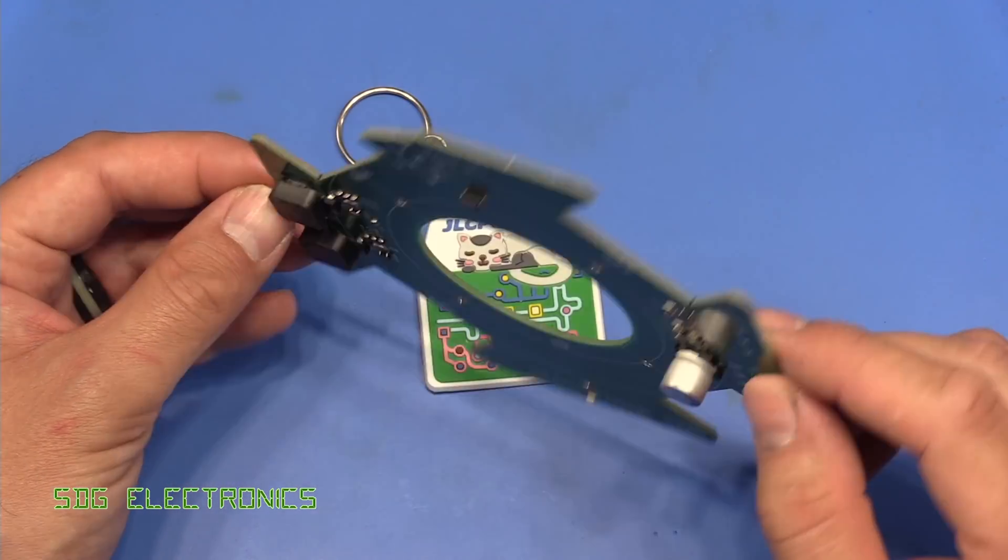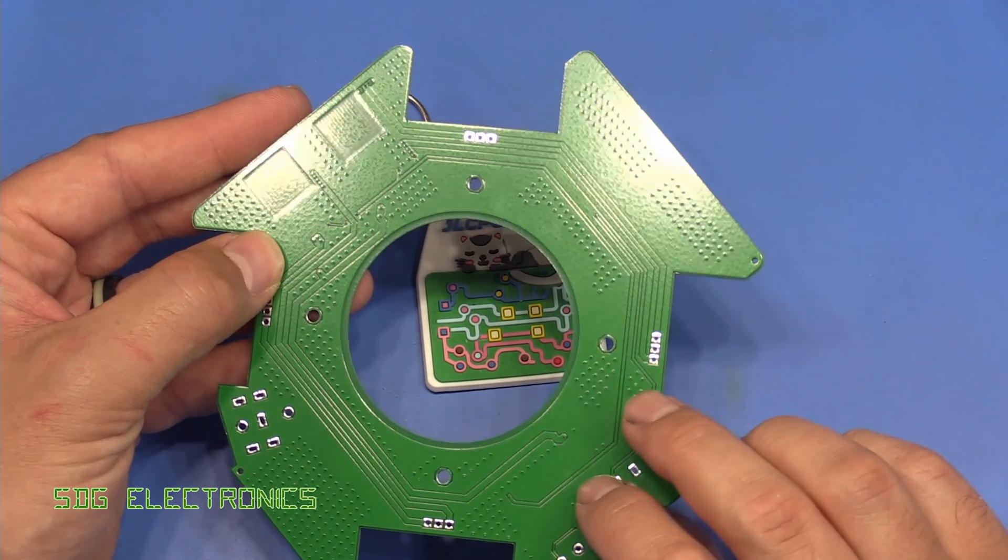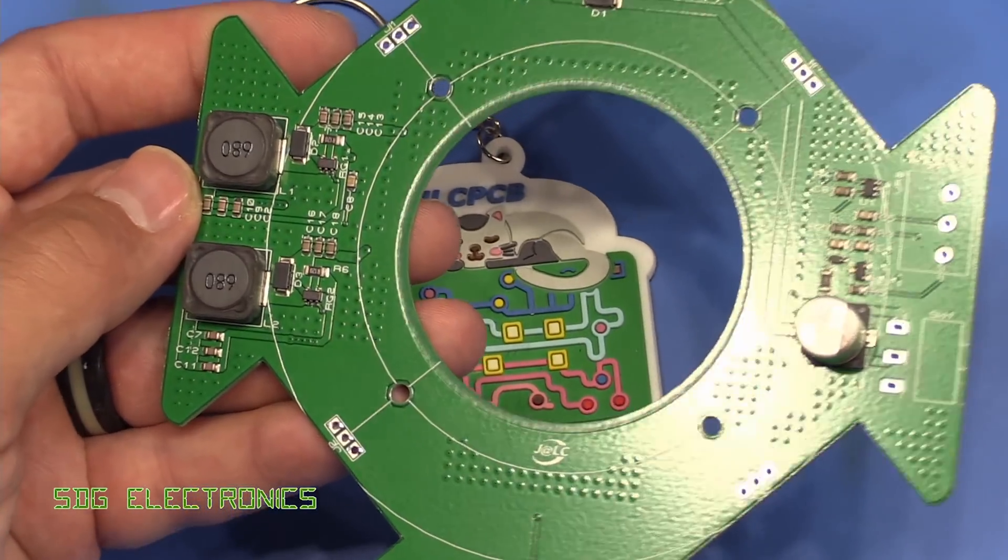Here is our PCB and it's looking pretty good. We've got nothing on the underside as we expect, just all of these vias tying the top and bottom planes together. Let's have a closer look at the PCB.